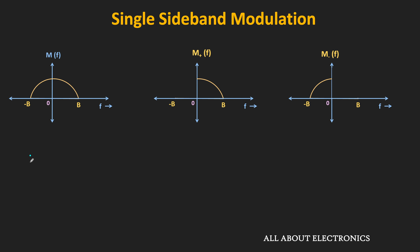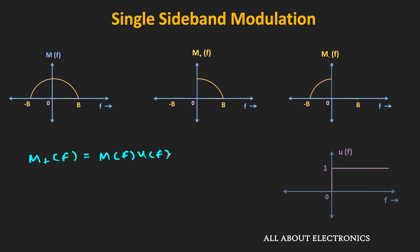M+(f) can be represented as M(f)·u(f), where u(f) is the unit step function. Similarly, M−(f) can be represented as M(f)·u(−f), because u(−f) exists only on the negative side.